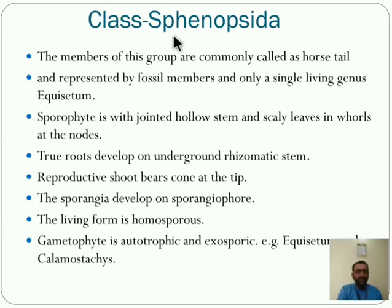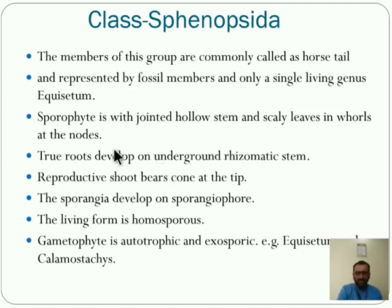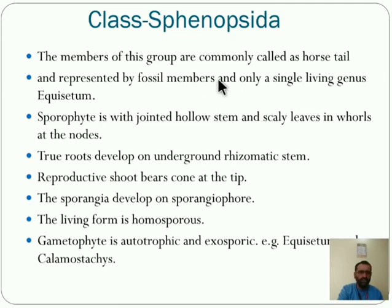The next one is Sphenopsida. Examples include Equisetum and Calamostachys — we know about Equisetum. The members of this group are commonly called horsetails because the structure of the plant resembles a horsetail. They are represented by fossil members, and only a single living genus — Equisetum — is there. All other genera are in fossil form.